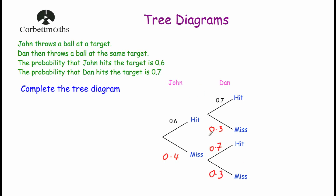The tree diagram also tells us all the possible outcomes. John could hit and Dan could hit, or John could hit and Dan misses. John could miss and Dan could hit, or John could miss and Dan could miss. So we've got all our possible outcomes: hit-hit, hit-miss, miss-hit, and miss-miss — all the possible outcomes of what could happen whenever John and Dan throw the ball at the target.